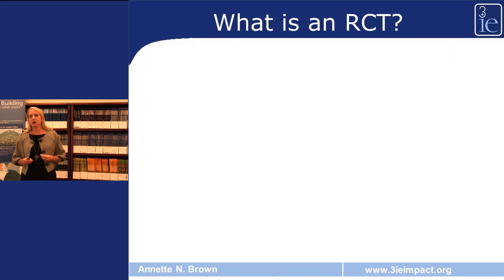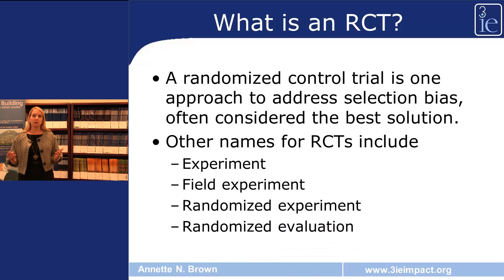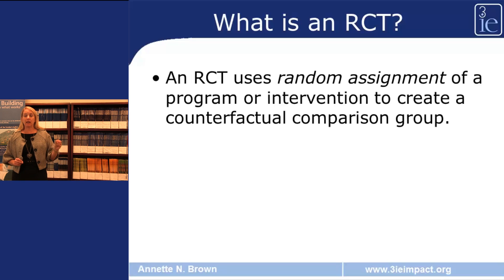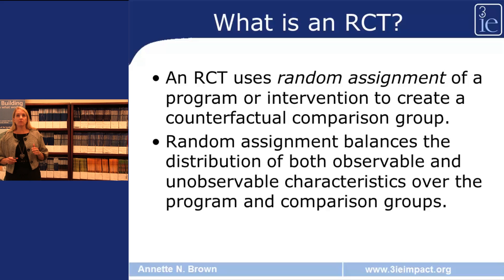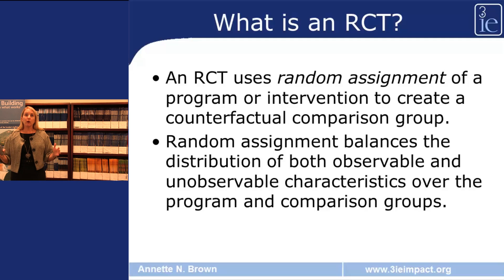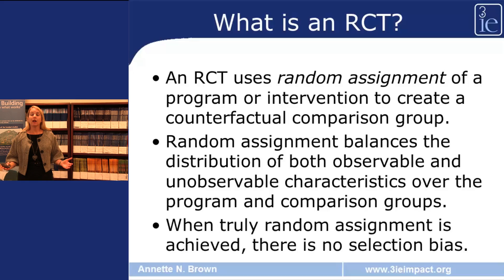So what is an RCT? A randomized control trial is one approach — and most people think the best approach — to address selection bias. RCTs are also called experiments, randomized experiments, or randomized evaluations. An RCT uses random assignment of a program or intervention to create a counterfactual comparison group. Random assignment balances the distribution of both observable and unobservable characteristics across the program and comparison groups. When you truly have random assignment, there is no selection bias and you have a valid counterfactual.